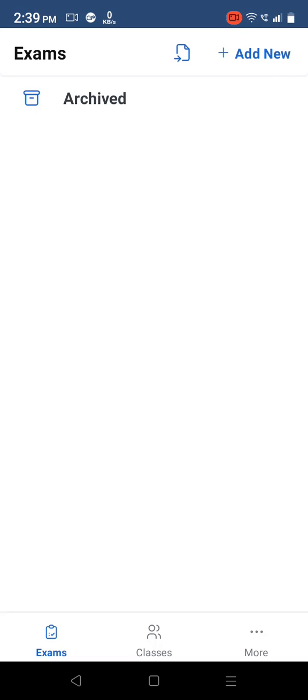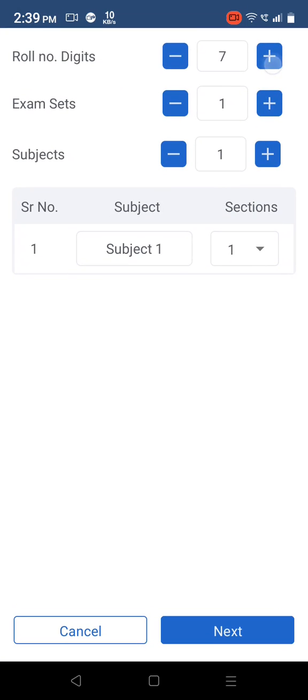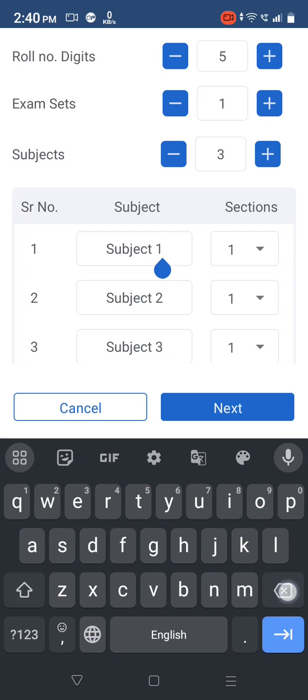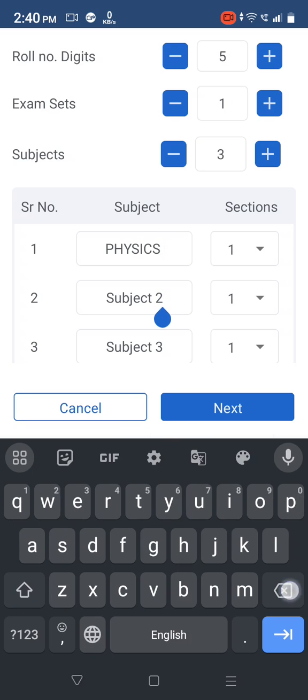Tap on Add New to create a new exam. Provide the number of roll digits. Change the exam set number for multi-set exams. Add the number of subjects. Add details of each subject such as name and number of sections or groups of questions in each subject.